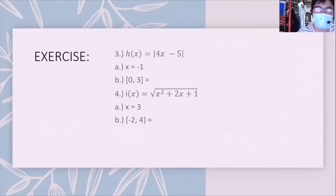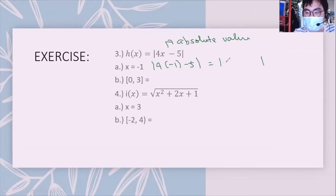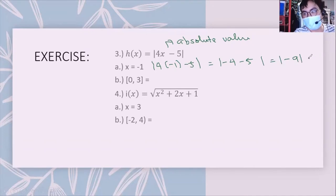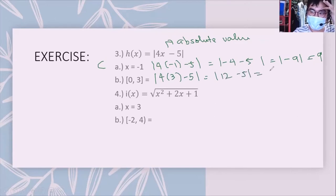This is an absolute value function. We substitute x = -1: 4(-1) = -4, minus 5 gives -9. Taking the absolute value, we get 9, so the function is continuous. Then substituting x = 3 from the given interval: 4(3) = 12 minus 5 gives the absolute value of 7, which is 7. The function is continuous.